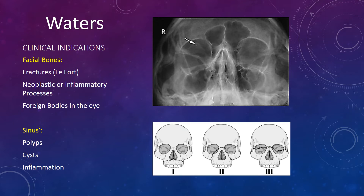The Waters projection is included in both the facial bone and sinus series. The clinical indications for this projection in the facial bone series include fractures mainly of the orbital roof, neoplastic or inflammatory processes, and foreign bodies of the eye. The clinical indications for the sinus series include polyps, cysts, and sinusitis.